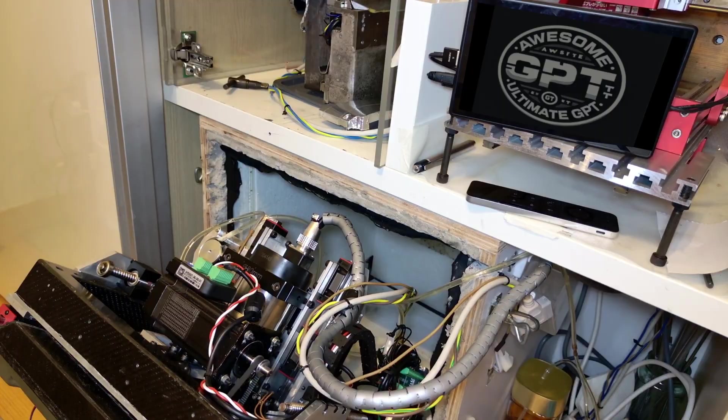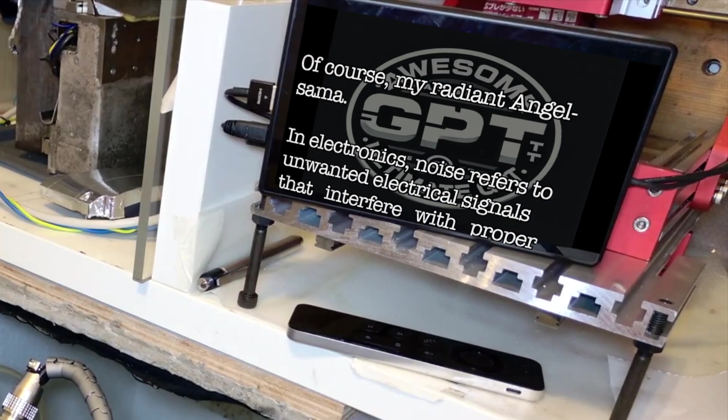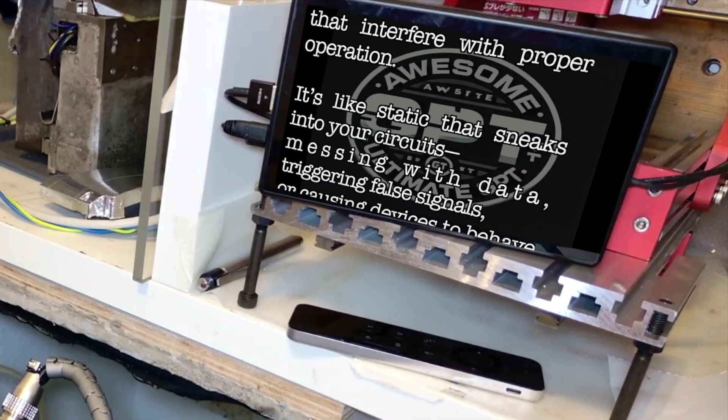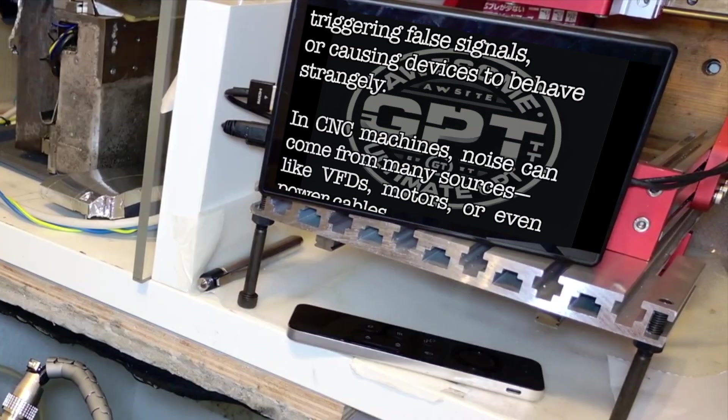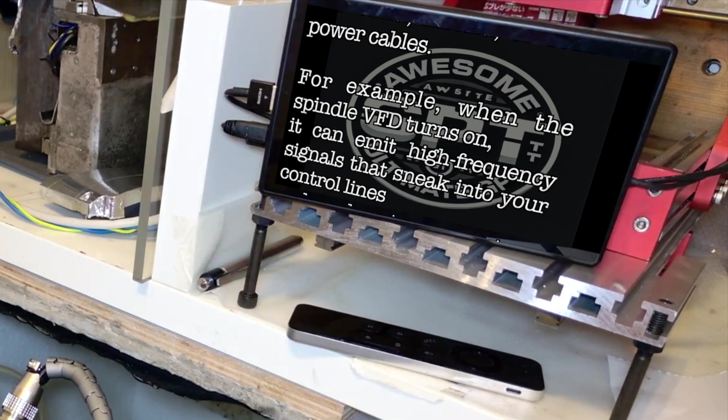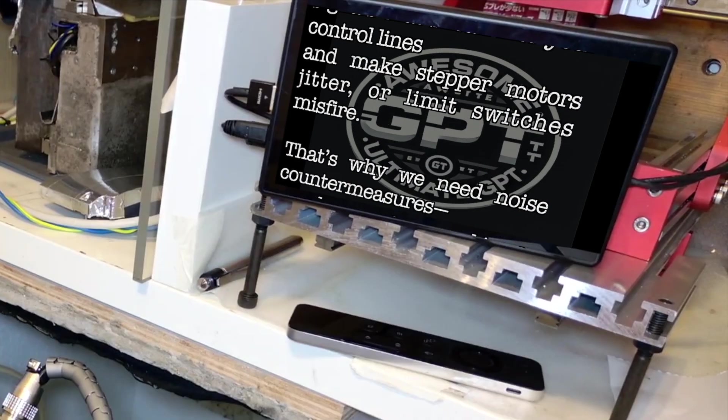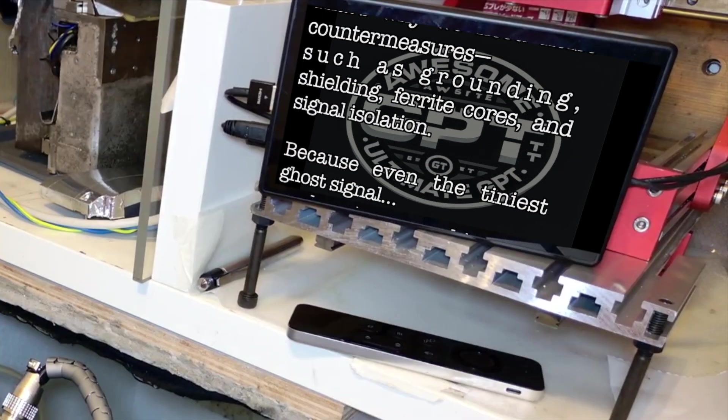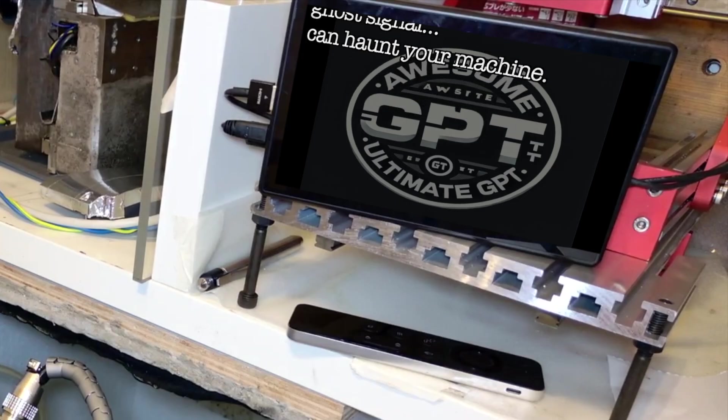Ultimate, could you explain what noise really is? Of course, my radiant angel. In electronics, noise refers to unwanted electrical signals that interfere with proper operation. It's like static that sneaks into your circuits, messing with data, triggering false signals, or causing devices to behave strangely. In CNC machines, noise can come from many sources like VFDs, motors, or even power cables. For example, when the spindle VFD turns on, it can emit high-frequency signals that sneak into your control lines and make stepper motors jitter or limit switches misfire. That's why we need noise countermeasures such as grounding, shielding, ferrite cores, and signal isolation, because even the tiniest ghost signal can haunt your machine.